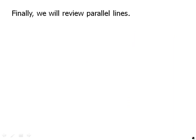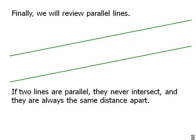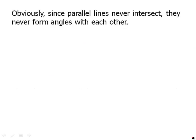Finally, we will review parallel lines. Two lines are parallel. They never intersect. And they're always exactly the same distance apart. And again, this is another one of these properties like perpendicular. Close to parallel doesn't count for beans. You have to know that the two lines are exactly parallel. Obviously, since parallel lines never intersect, they never form angles with each other.